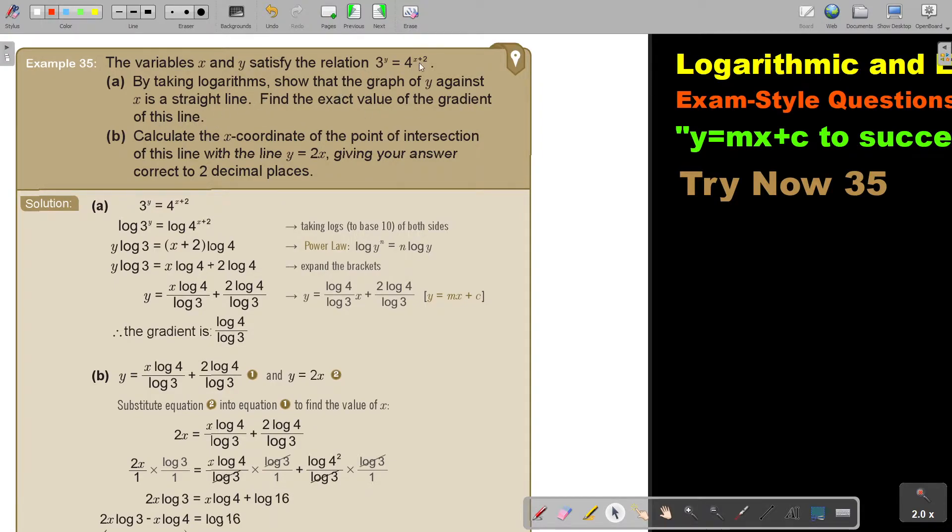So just like we did when we transformed a relationship to a straight line, we take logs on both sides. Then we use the laws. We bring it down, we bring it down. We can multiply, multiply.